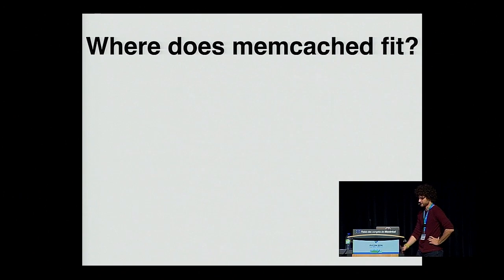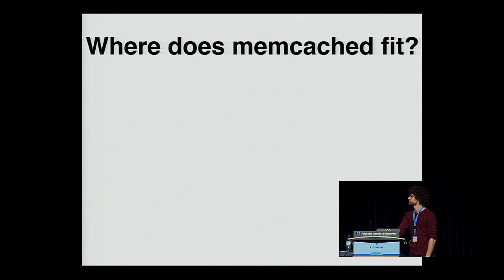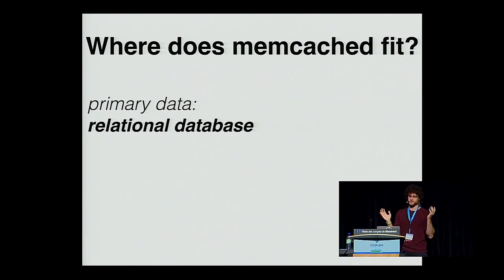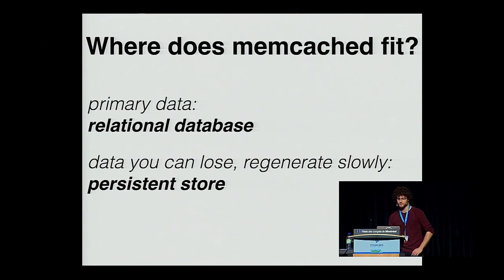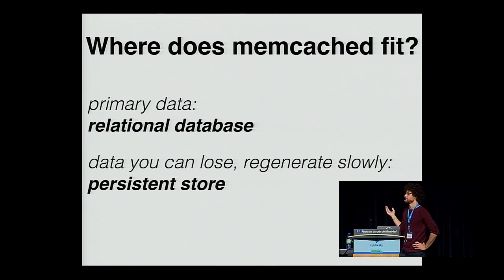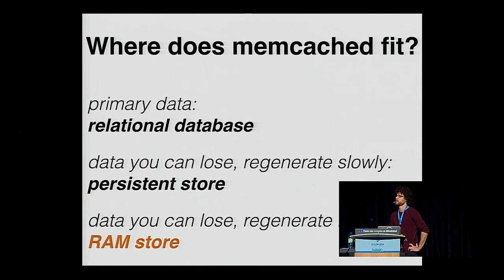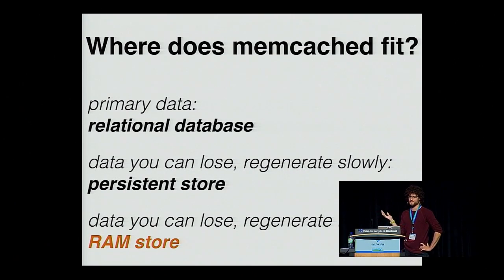Where does memcached fit in your stack? Typically you have a primary data store — most people use relational databases — for any data you don't want to lose: user accounts, payments. A lot of people use persistent stores like MongoDB or Redis for data you can afford to lose but is very slow to regenerate. In web applications, very slow might mean a few seconds; for DNA processing, it might mean days. And then there's data you can lose and regenerate fast — in web applications maybe dozens of milliseconds — and that's where people like to use a RAM store. Memcached is a RAM store.